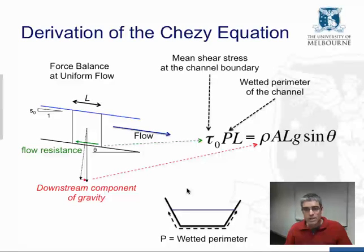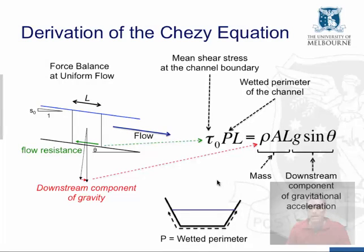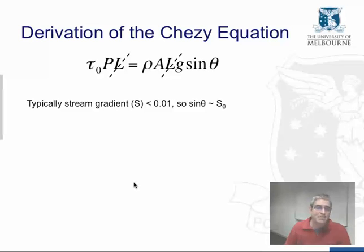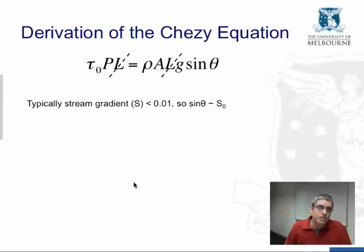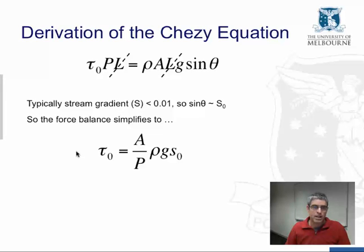The downstream component of gravity is given by a second expression, where density times cross-sectional area times length L gives the mass of the water volume, and g·sin(θ) is the downstream component of gravitational acceleration. We can cancel L from both sides. Typically in an open channel the stream gradient is less than about 1 in 100, and under these conditions sin(θ) approximately equals the stream gradient — the distance of fall over the distance of travel.